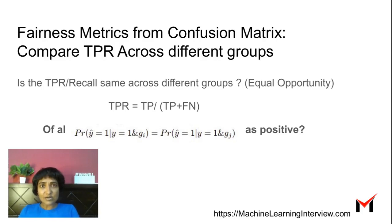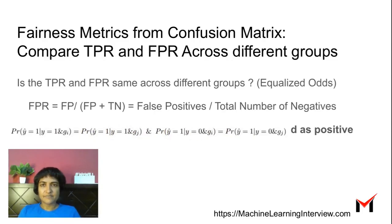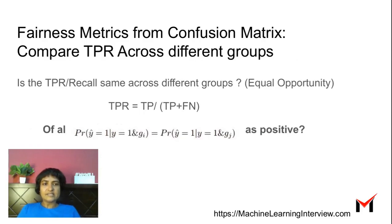How many of the positives were actually classified as positive? Is this the same for the male and the female groups — do we have the same recall in both groups? This could be a way of measuring fairness. This is called equal opportunity, where both groups are getting equal opportunity of being classified correctly — the recall is the same.